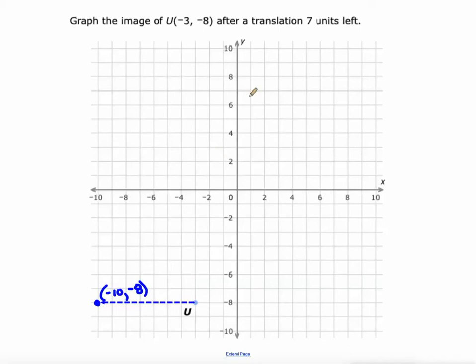negative 8. Another way to think about this is when it says 7 units left, that's like subtracting 7 from your X value. So the new image would be negative 3 minus 7 is negative 10. So negative 10, negative 8 ends up being the point. You can look at it visually or mathematically. The math behind translations is addition and subtraction.